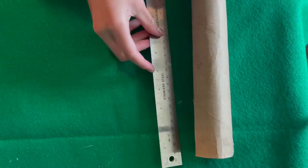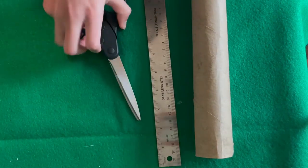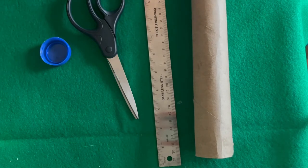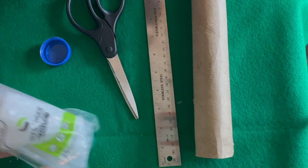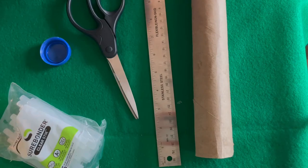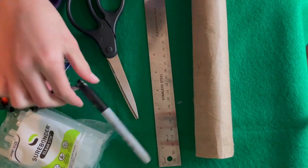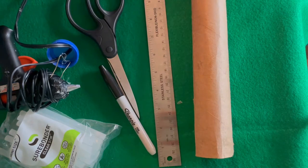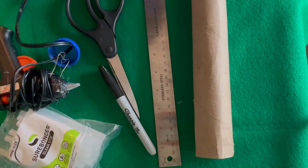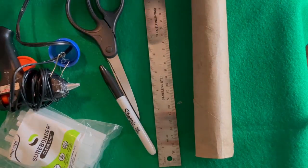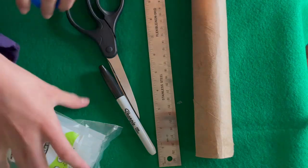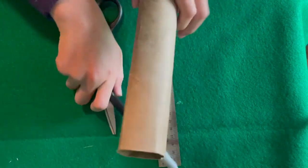a ruler, scissors, bottle cap, hot glue, glue gun, sharpie, paint, fabric, and stuff. Now let's get started.